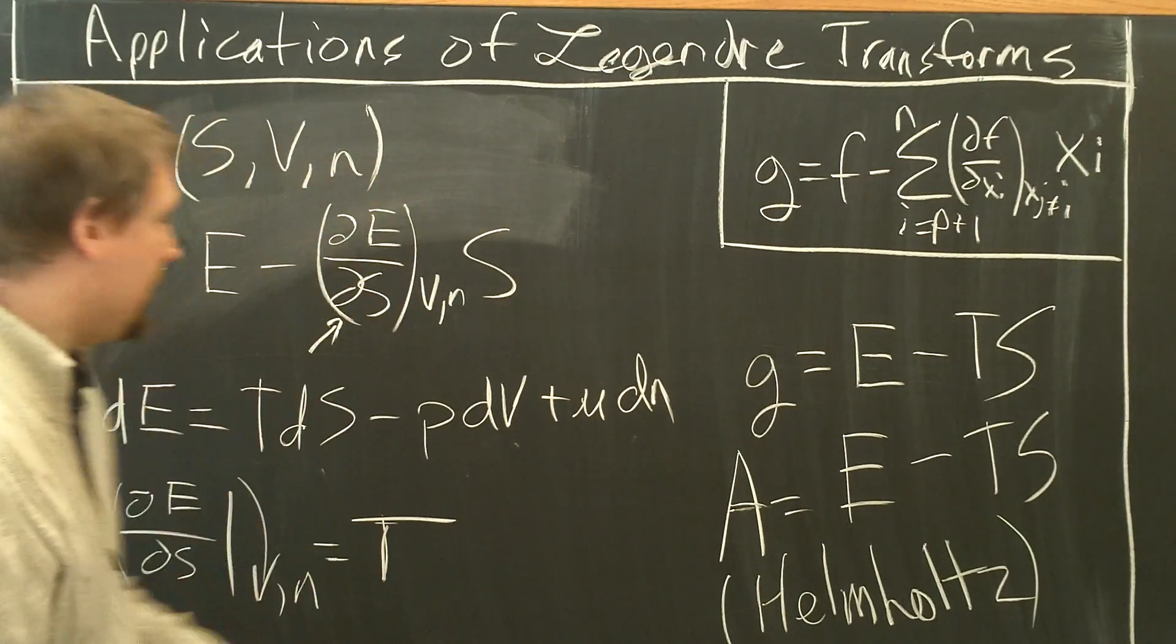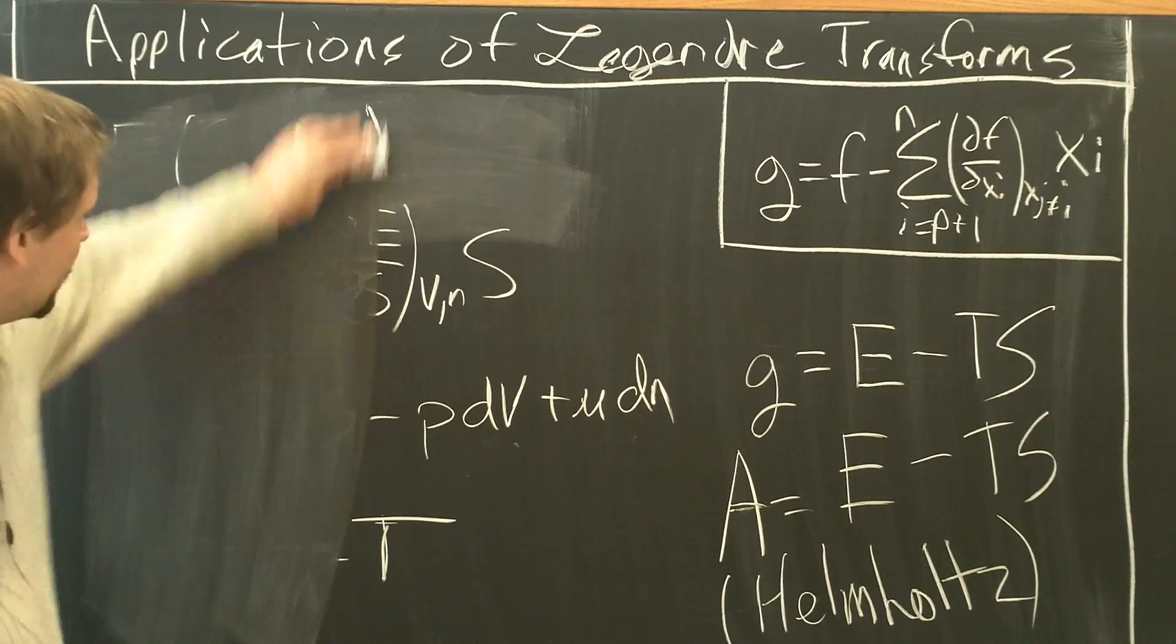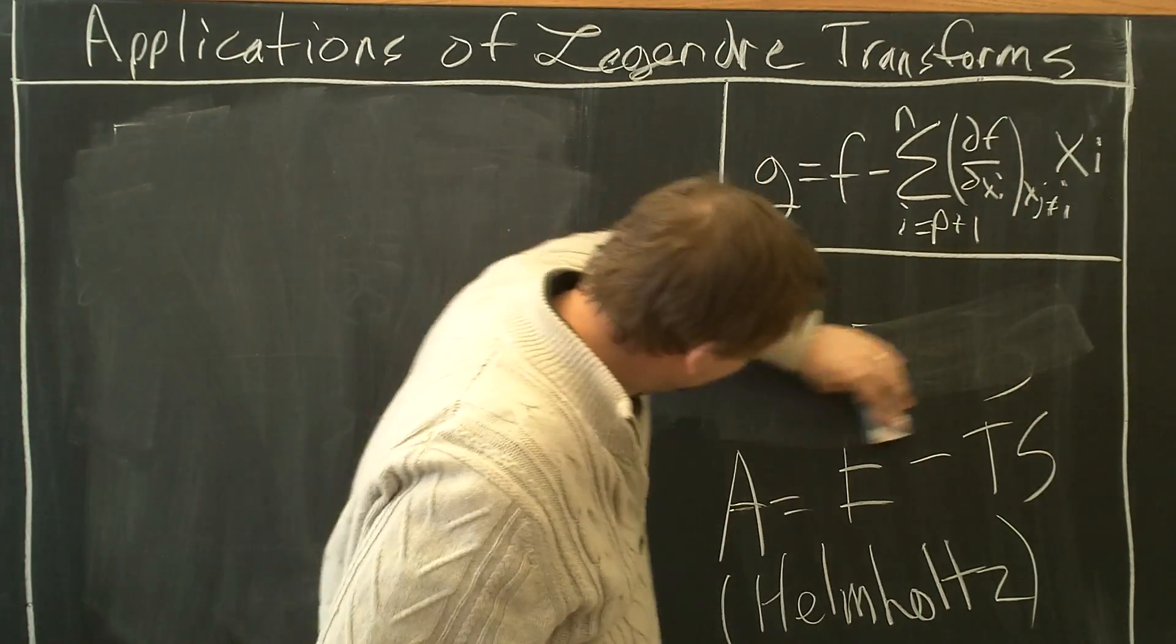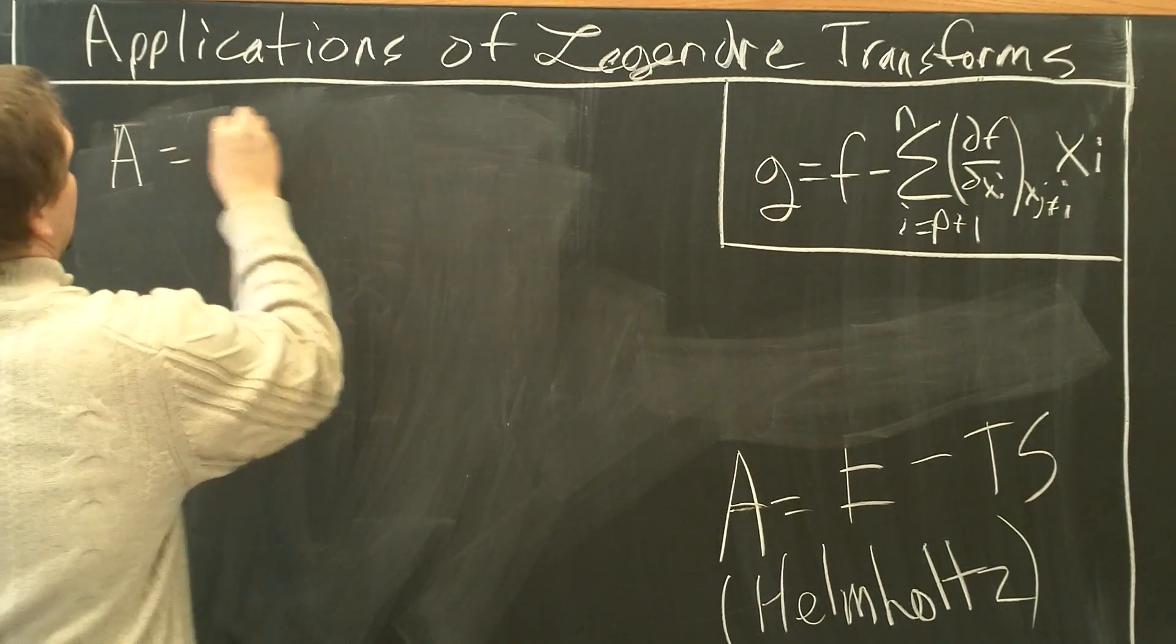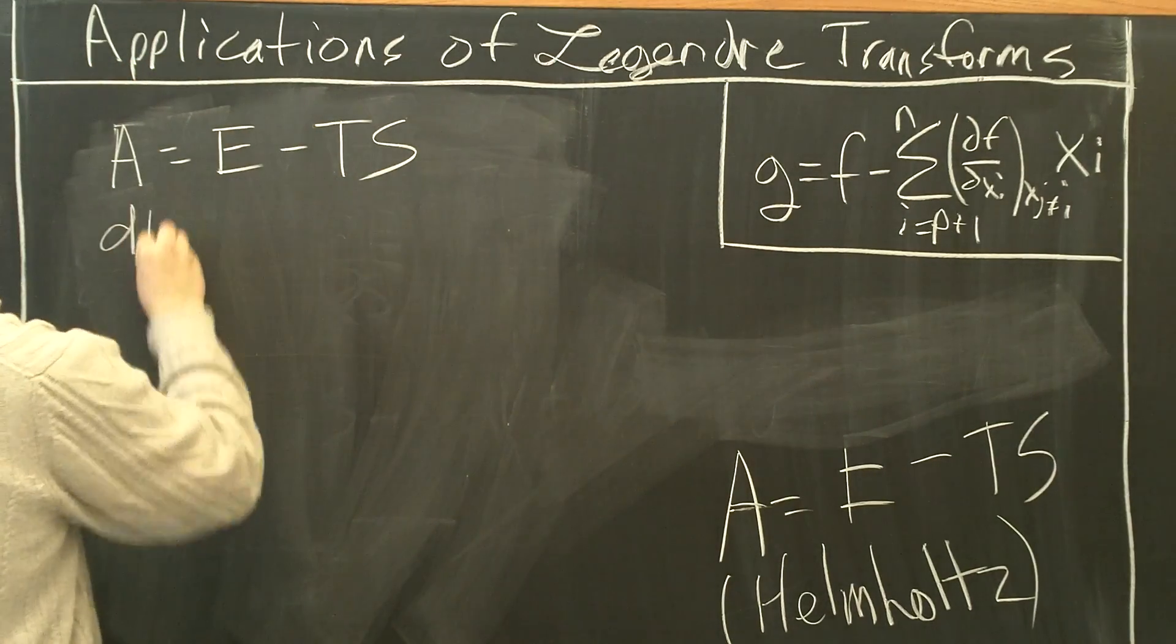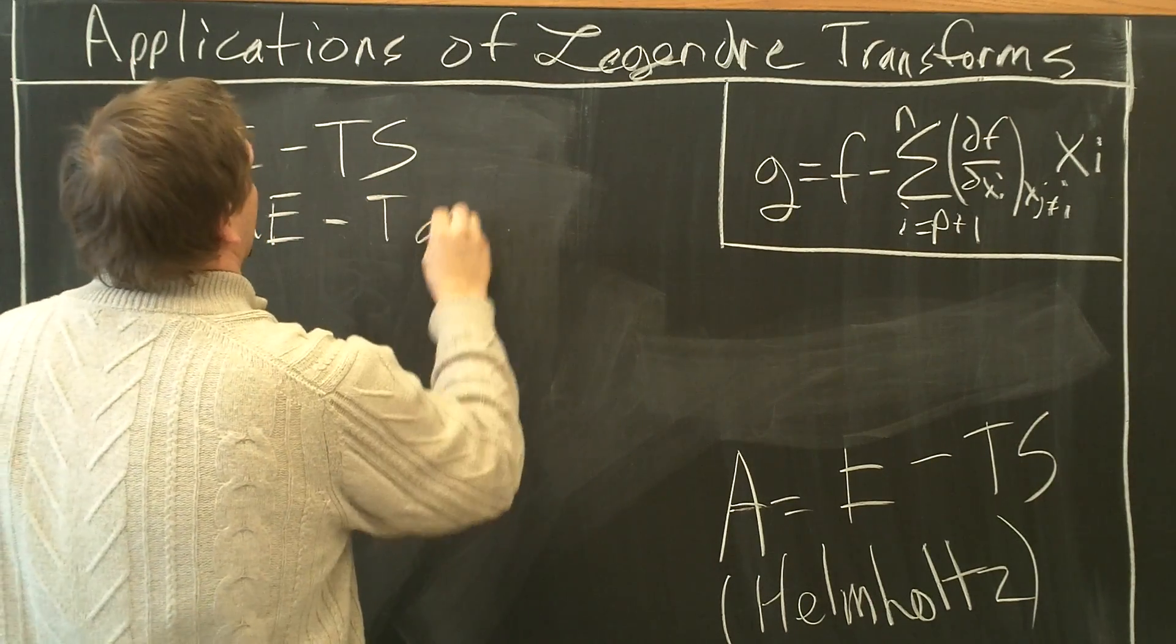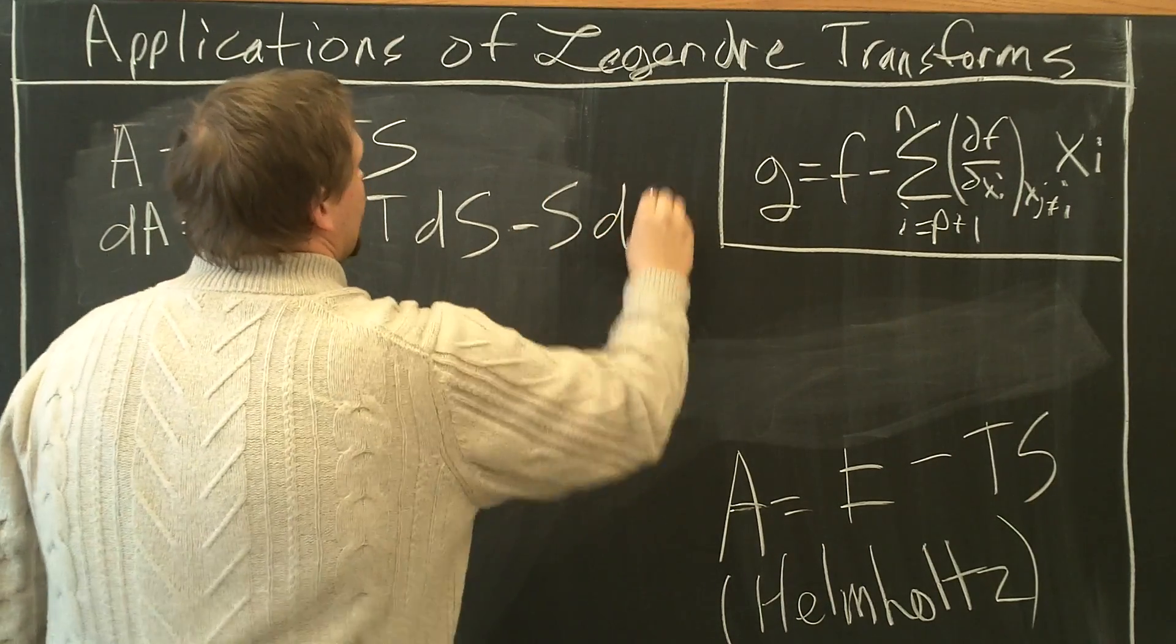So we can go a little bit farther here and figure out what A is a natural function of. So we have A equals E minus TS. dA equals dE minus TdS minus SdT.